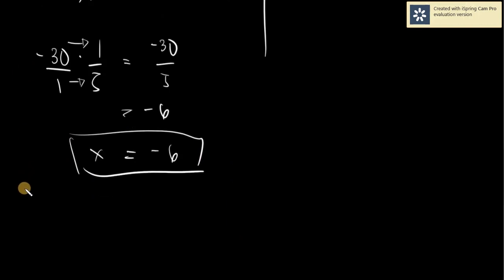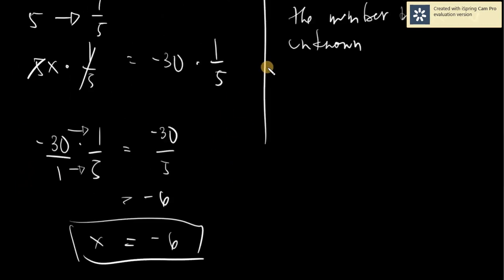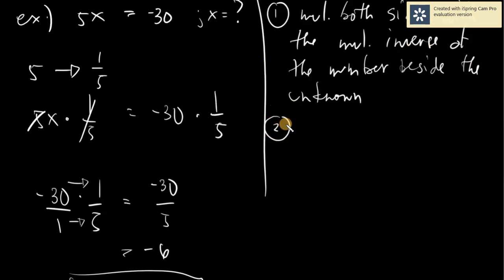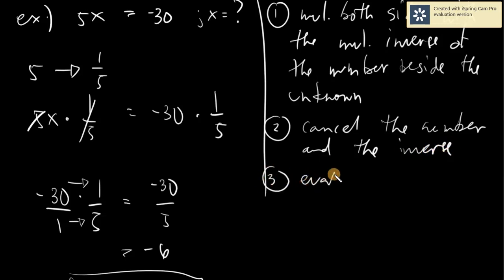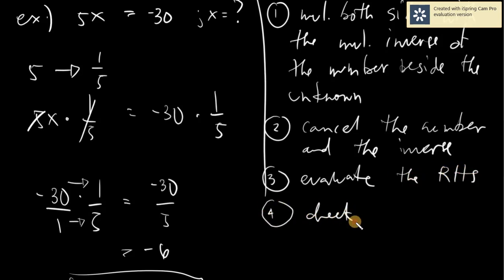Let's go back and finish the rules. After multiplying with the inverse, rule 2 is: cancel the number and its inverse. Rule 3: evaluate the right-hand side. And rule 4 — always — is checking.